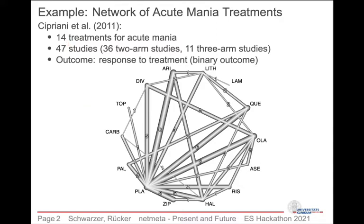Here you can see the network graph for this network. I would like to focus on the comparison of Aripiprazole versus lithium. There is just one study comparing them directly, but there are six studies comparing Aripiprazole with placebo and three studies comparing lithium with placebo. The idea in network meta-analysis is that we can use this indirect information in order to get a more precise estimate of the comparison Aripiprazole versus lithium.